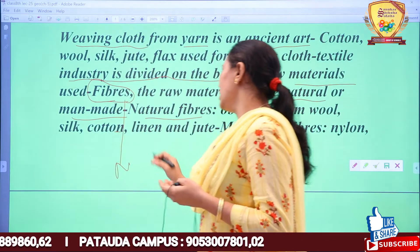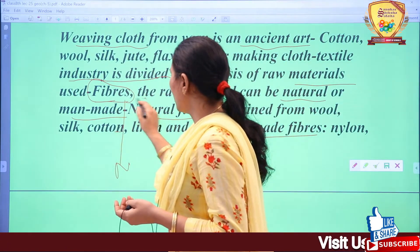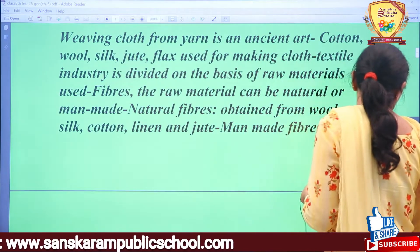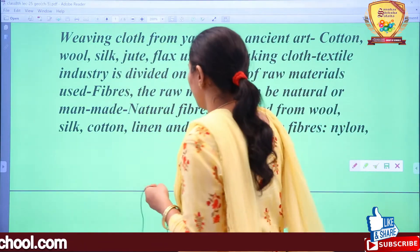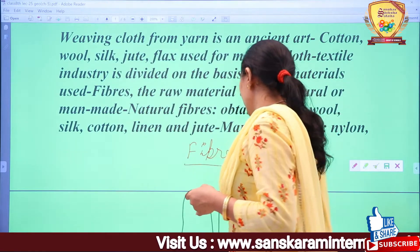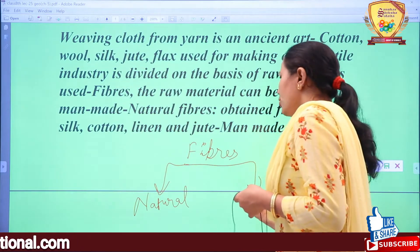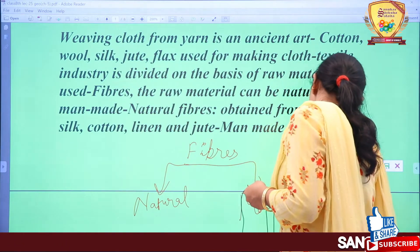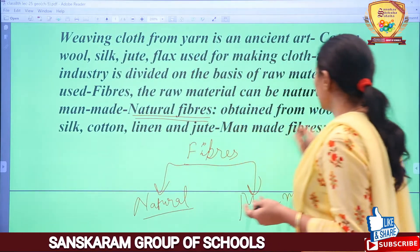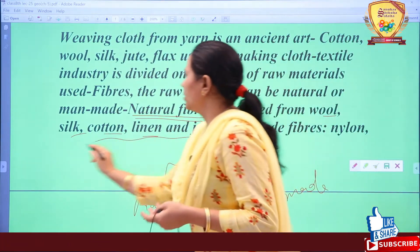Natural fibers are obtained from wool, silk, cotton, linen, and jute - these are all included in natural fibers. If we make a flow chart: Fibers are categorized into two types - first is Natural, and second is Human-made or Man-made. Wool, silk, cotton, linen, and jute all fall under natural fibers.